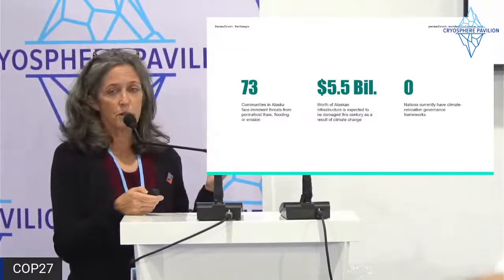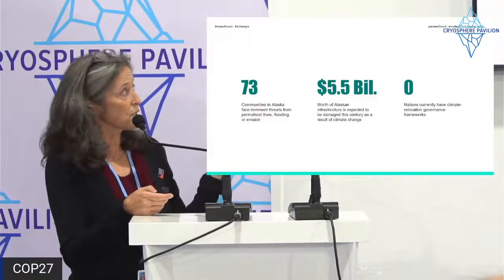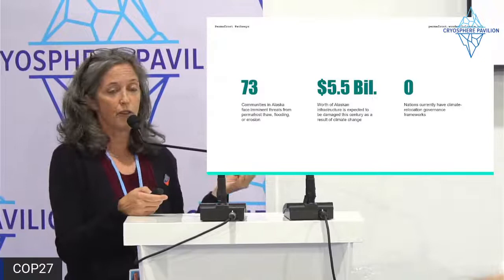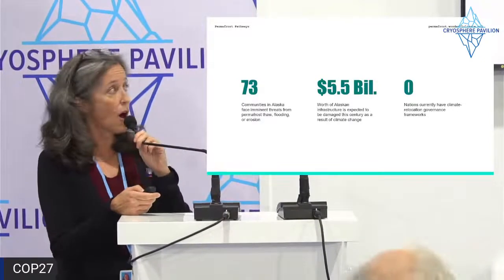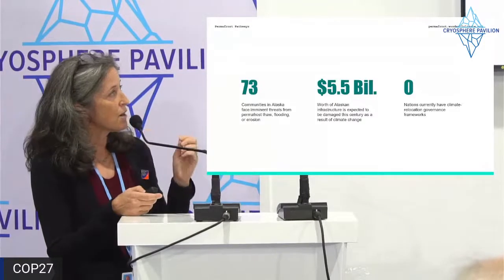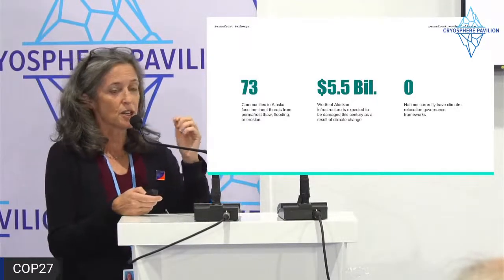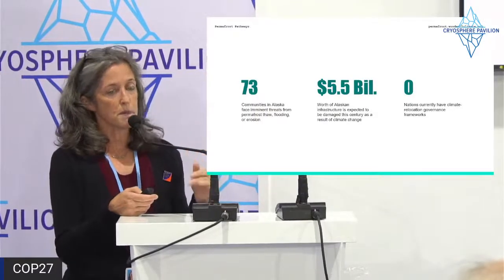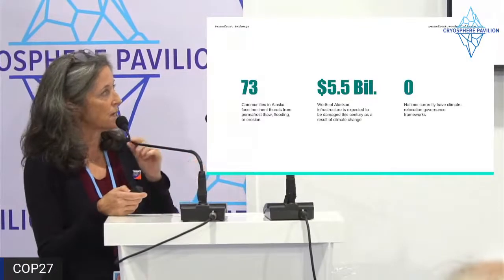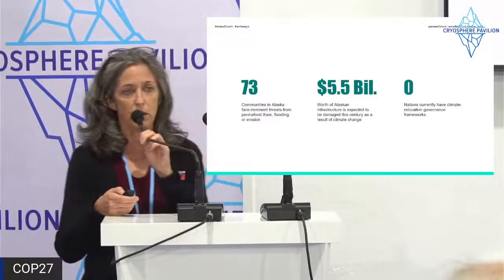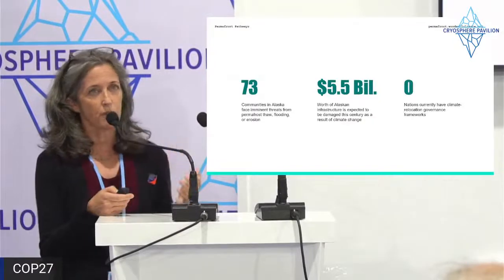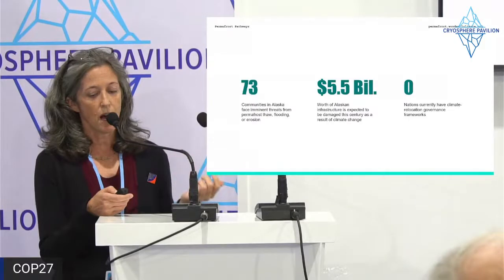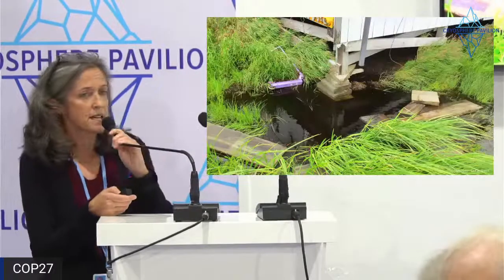In Alaska alone there are at least 73 communities facing imminent threats from permafrost thaw, flooding, and erosion, with about 5.5 billion dollars in economic impact. Given the economic, cultural, and human cost of these local tipping points, no countries currently have any climate relocation governance framework to deal with this. Regardless of whether this is a climate tipping point, serious impacts are happening now.